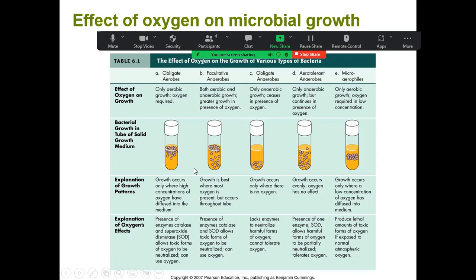You inoculate the tube with the microbe. If the tube only has growth at the top, you know it is an aerobe. As you go down the tube there will be less and less growth — most growth at the top, and at the very bottom of the tube there is no growth because there is no oxygen, and aerobes require oxygen to grow.